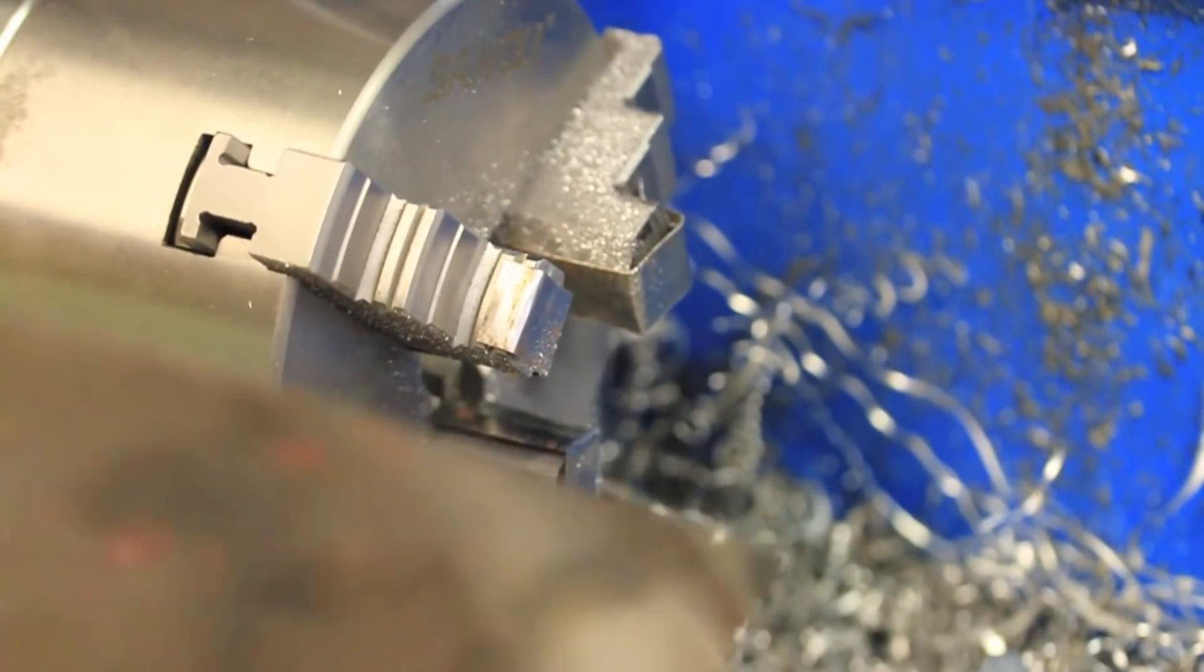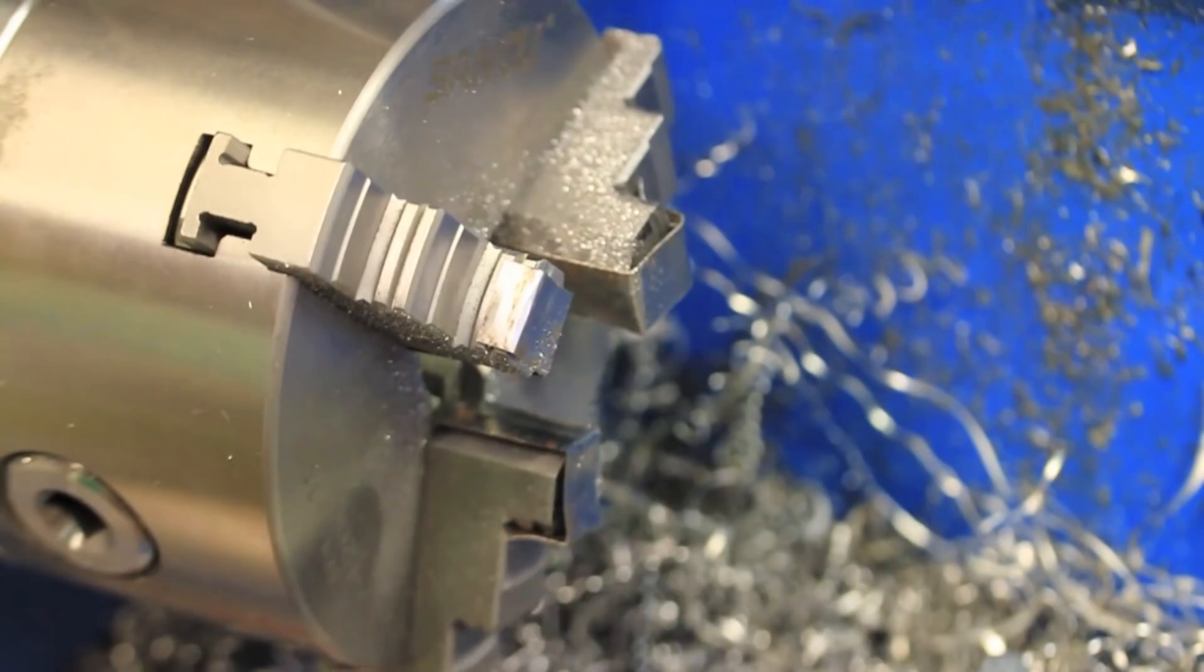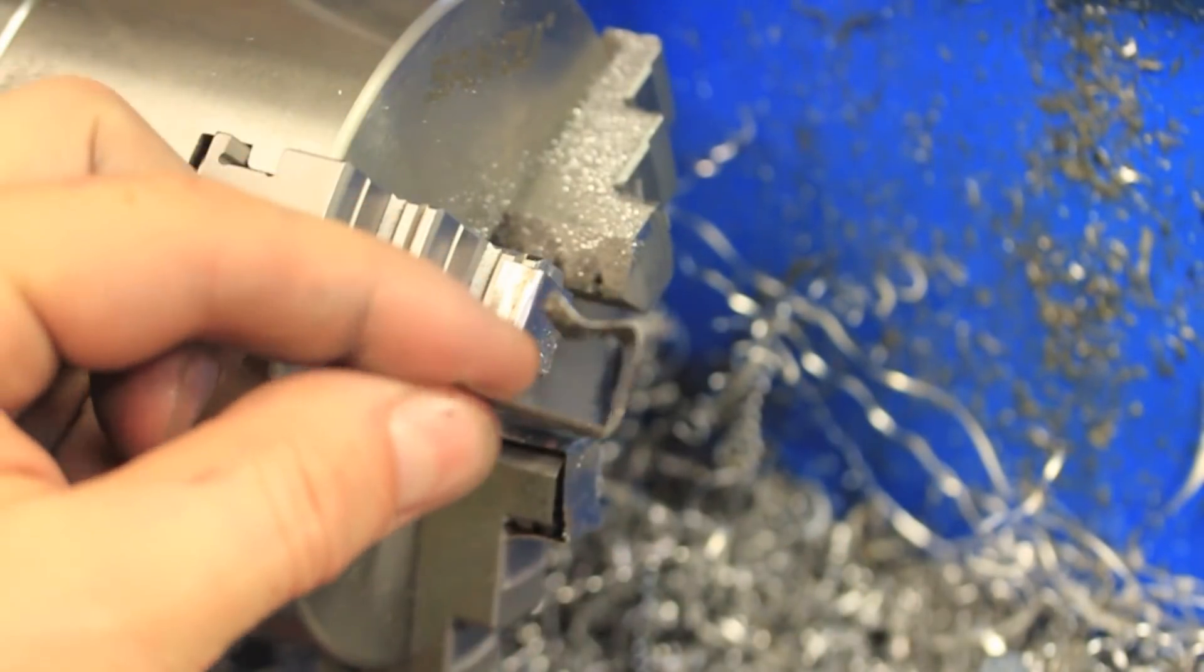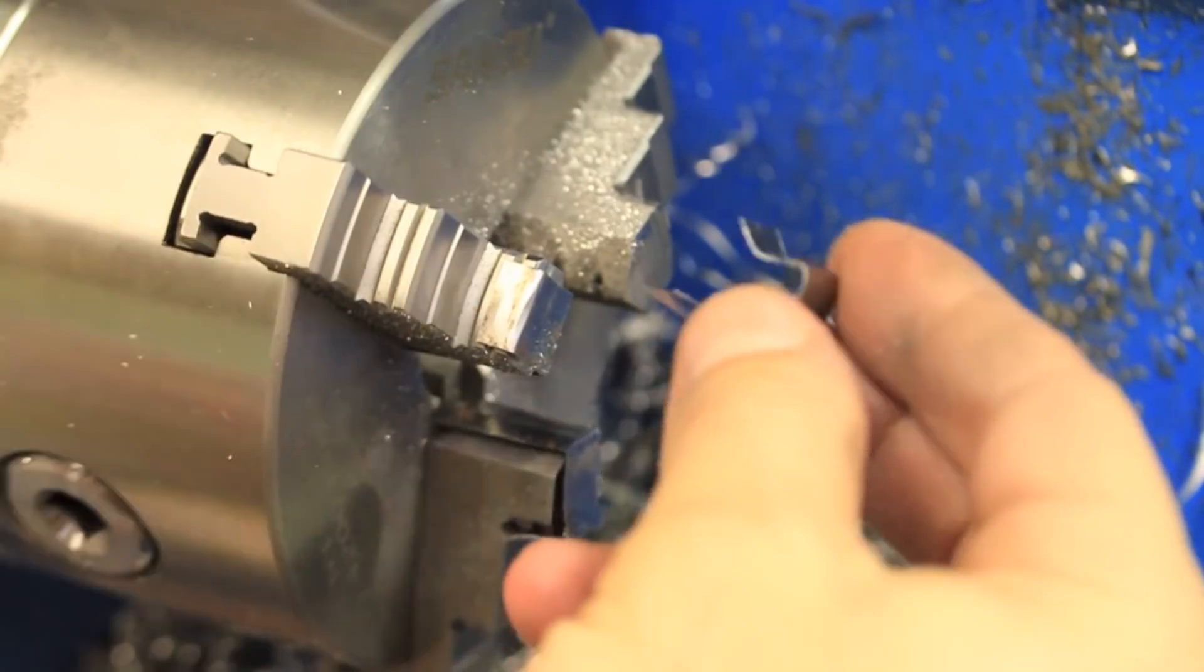As a side note, I made these little clips out of some shim steel to go on the jaws so that when they clamp down on the newly knurled surface it doesn't damage it.